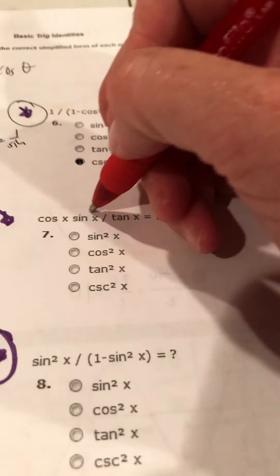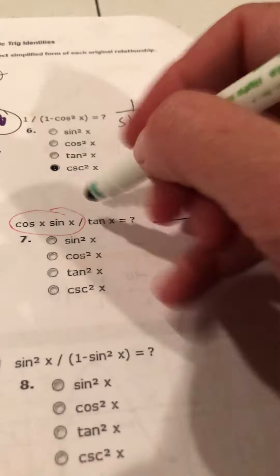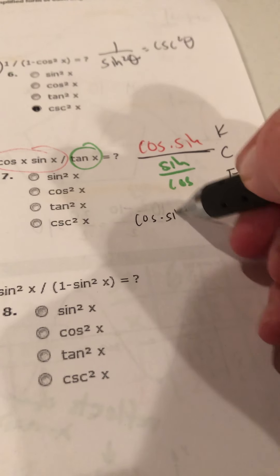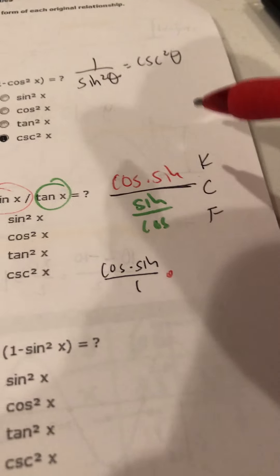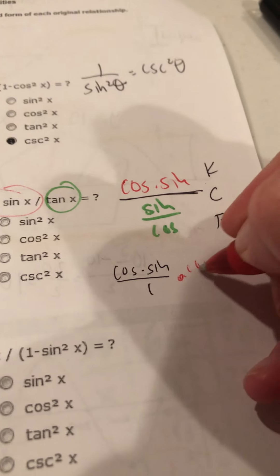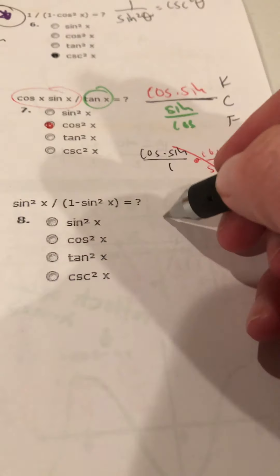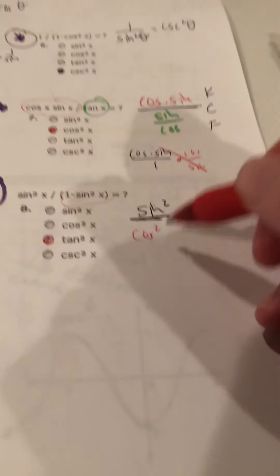Number 7: (cosine × sine)/(cosine × sine) divided by tangent. Tangent is sine/cosine — keep-change-flip gives cosine/sine × cosine/sine. The sines cancel, leaving cosine². Number 8: sine²/cosine². We recognize sine/cosine as tangent, so sine²/cos² = tangent² — because it's both squared.